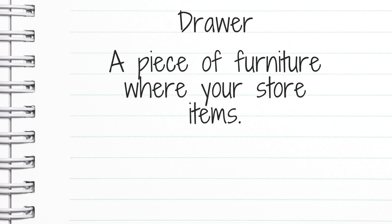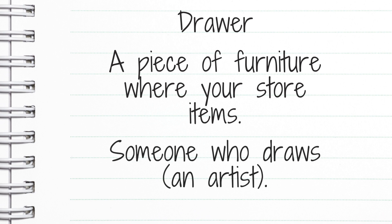Now let's look at d-r-a-w-e-r, which is much easier to remember. If you remember this one, you shouldn't use the other one incorrectly. 'Drawer' is a piece of furniture where you store your items. It's also someone who draws — an artist — but typically when we use this word in a sentence, it refers to the furniture.